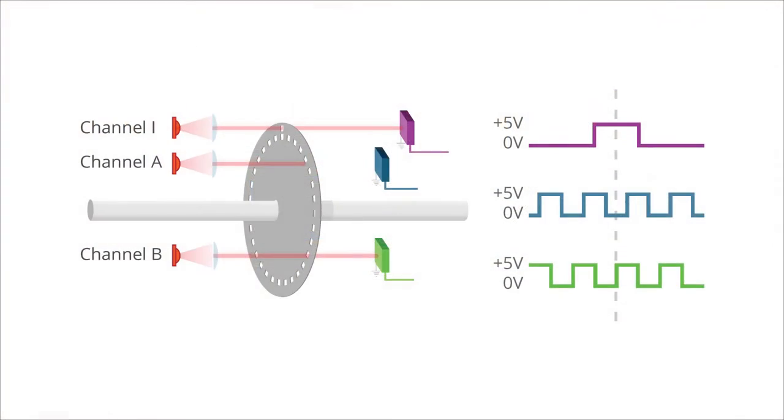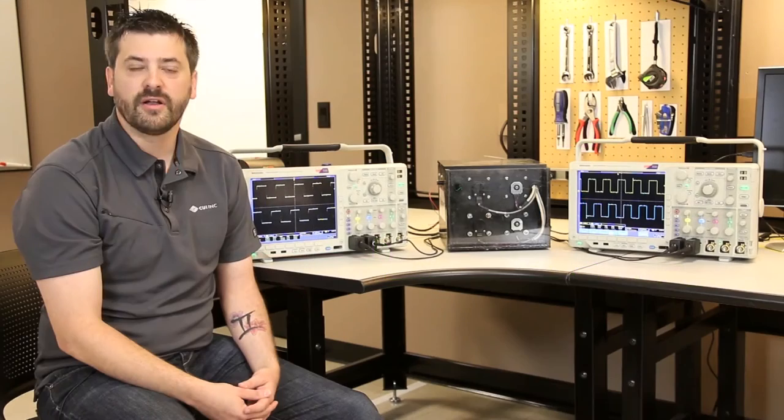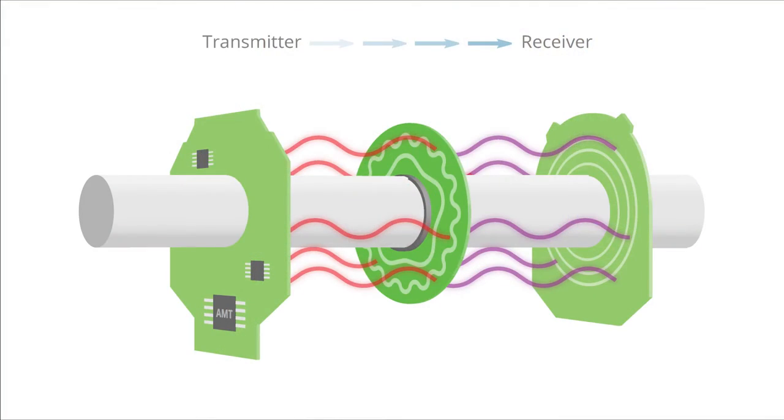Optical encoders require line of sight, and if it's a dirty or dusty environment or a lot of oil in there, that can drastically influence the performance of that optical encoder. An AMT encoder, being capacitive-based, is not susceptible to airborne contaminants or any oil in the system, making it ideal for a lot of motion control applications.